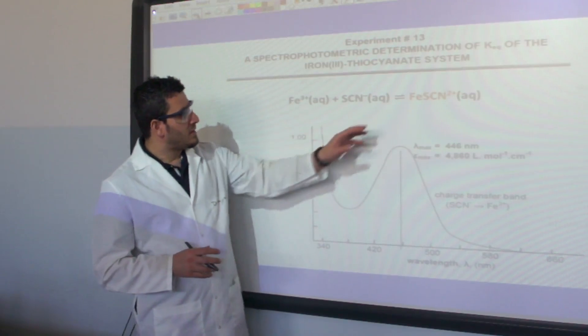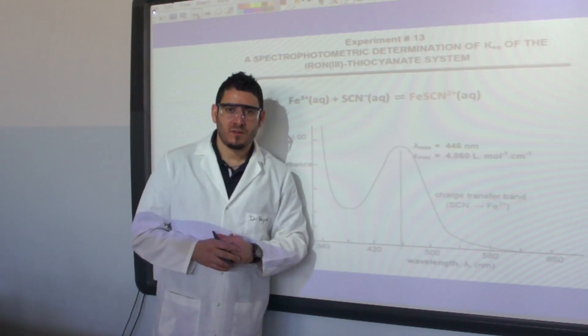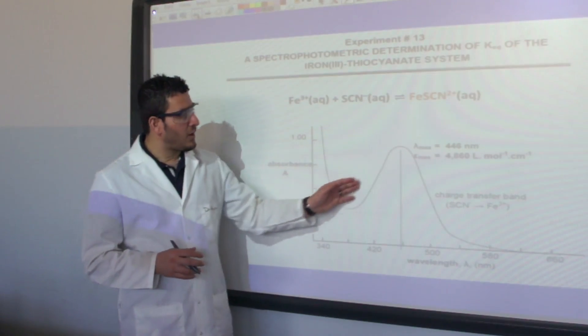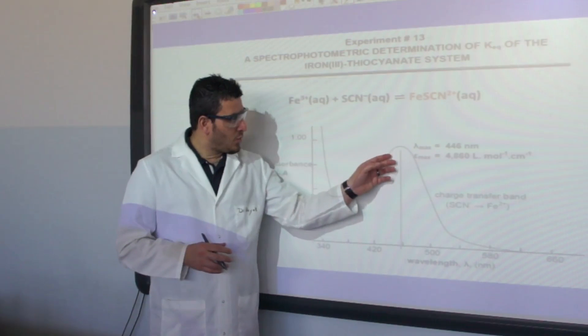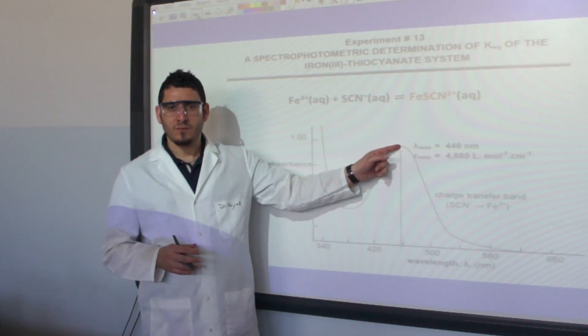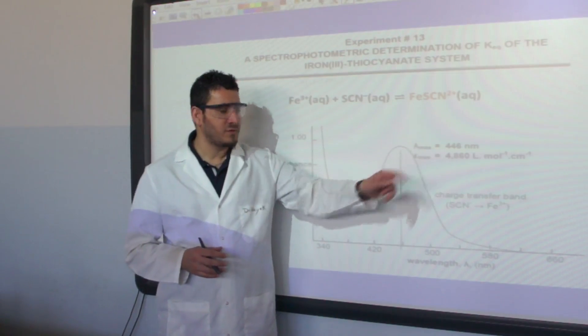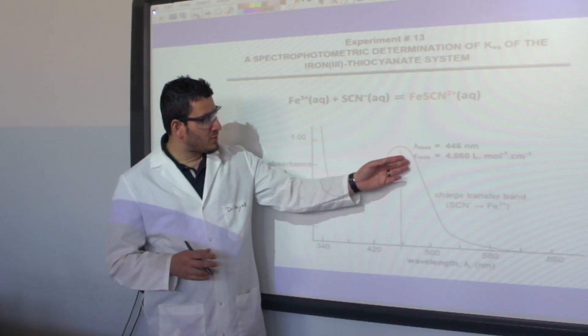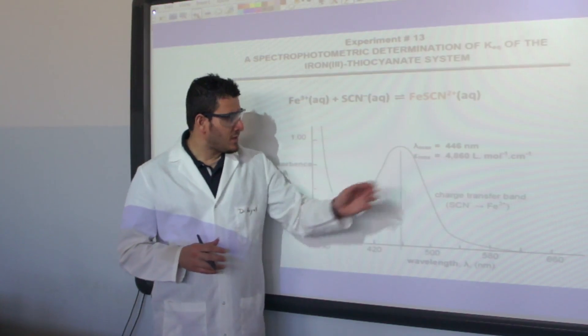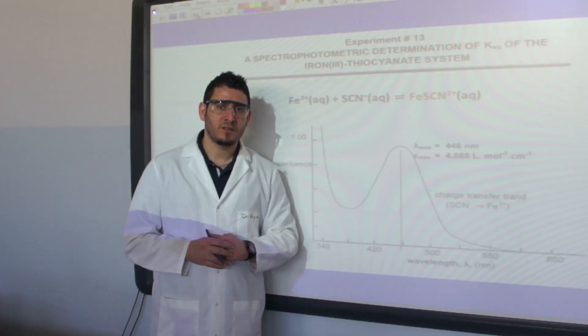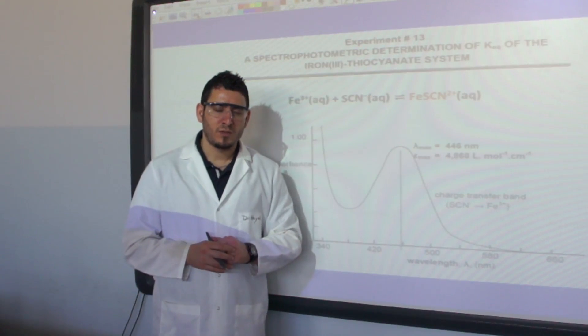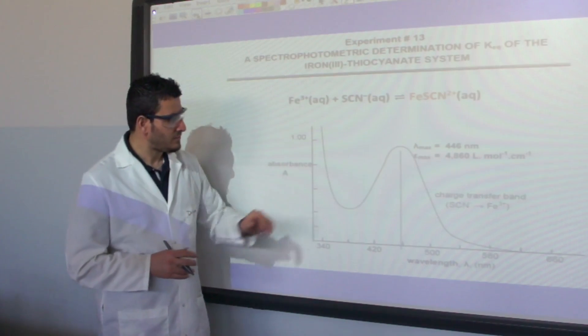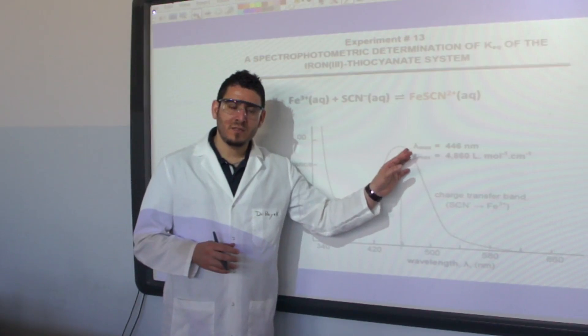The complex iron thiocyanate has the following absorption spectrum where it absorbs maximum light at 446 nanometers. The molar absorptivity is given and it's equal to 4860 liters per mole centimeter.